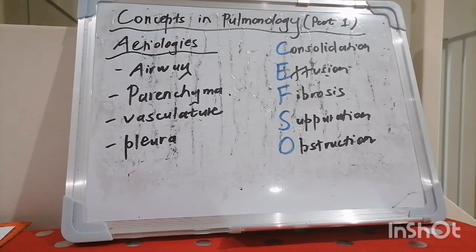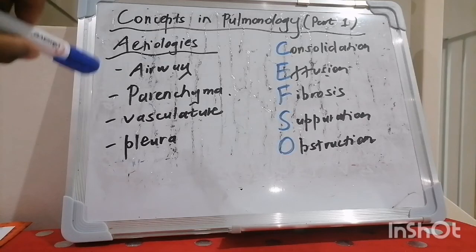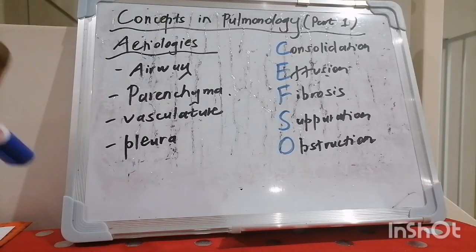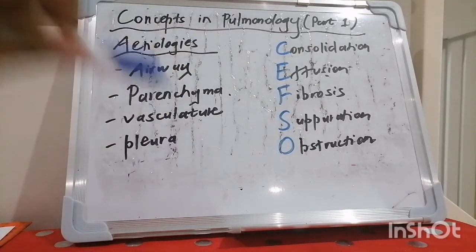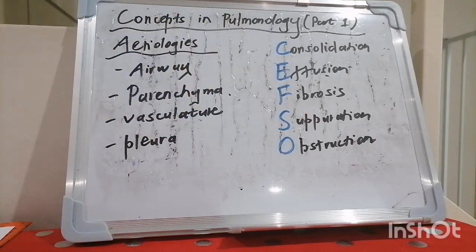So there you have it, guys — concepts in pulmonology. In terms of what can affect the lungs: is it affecting the airway, the parenchyma, the vasculature, or the pleura? And in terms of the pathophysiology: is it consolidation, effusion, fibrosis, suppuration, or obstructive in nature? God bless you, and have yourself a wonderful day.